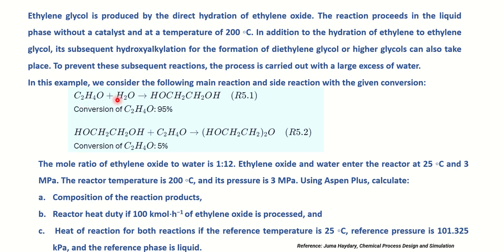That means if I feed 100 kmol per hour of ethylene oxide, I have to feed 1200 kmol per hour of water. The feed temperature and pressure are 25°C and 3 MPa. We are asked to use Aspen Plus to calculate the composition of the reaction products and reactor heat duty if 100 kmol per hour of ethylene oxide is processed. We are also asked to determine the heat of reaction when the reference temperature is 25°C and the reference pressure is 101.325 kPa.